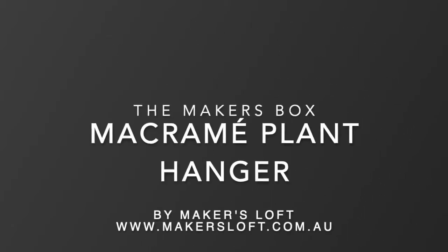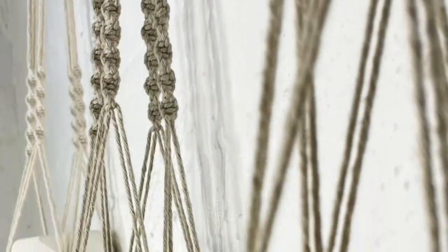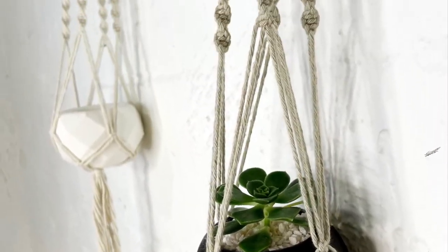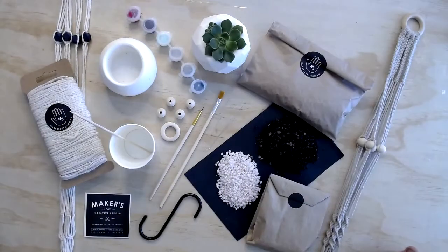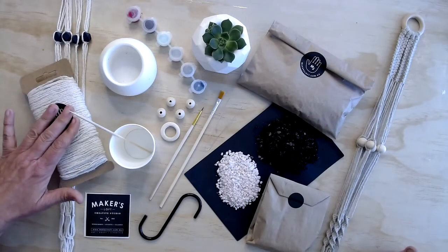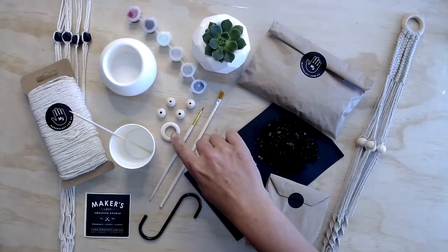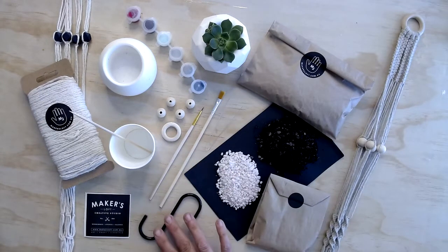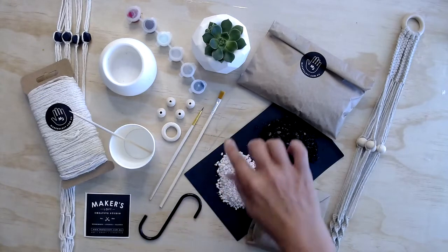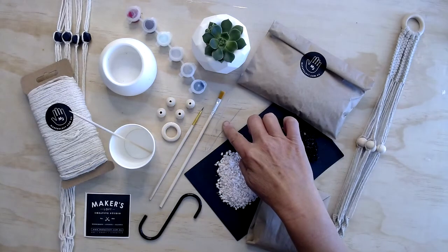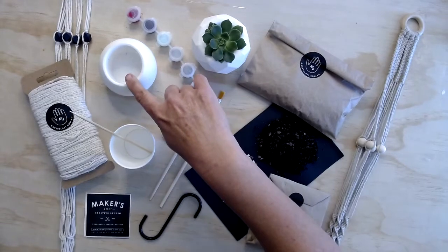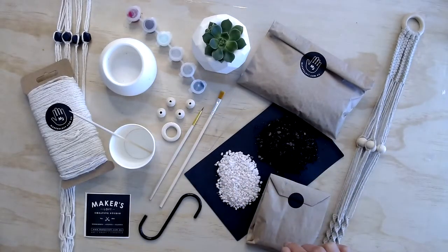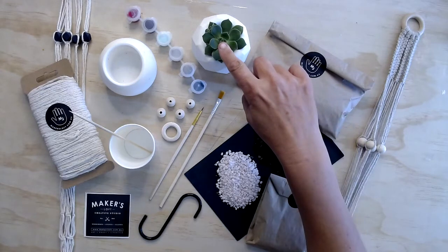Hi Makers, it's Anuk here from Makers Loft with another great project from our Makers Box range. In your pack you would have received some macrame cord, some wooden beads, a wooden ring, a hook, a bead threader, some paints, a little pot, soil and pebbles, and a succulent cutting.